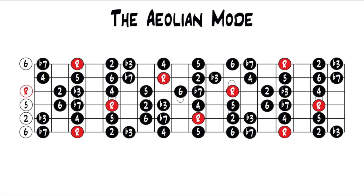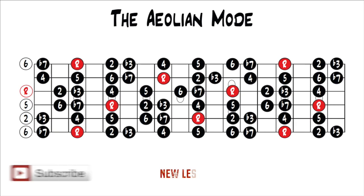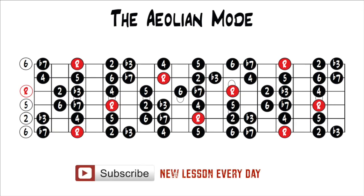If you'd like to go back and start at the beginning, you can click the link on the screen. So far we've looked at the first mode of the major scale — the Ionian mode — the second, the Dorian mode, the third, the Phrygian mode, the fourth, the Lydian mode, the fifth, the Mixolydian mode. And now we're on the sixth mode, the Aeolian mode.